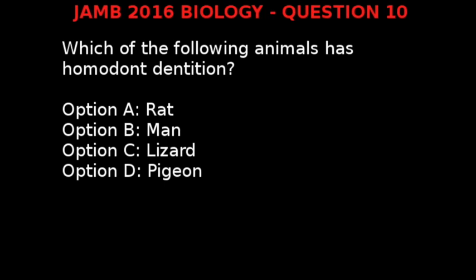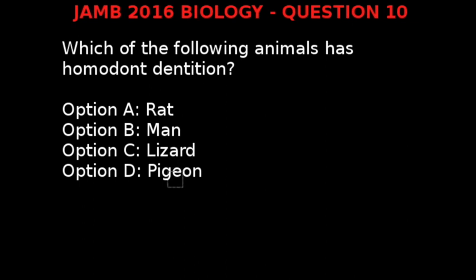JAM 2016 Biology Question 10. Which of the following animals has homodont dentition? Option A: Rat. Option B: Man. Option C: Lizard. Option D: Pigeon. Homodont dentition is a type of teeth arrangement where all teeth have the same size and shape and perform the same function — no tooth is specialized for a particular function. Examples include reptiles, fishes, and amphibians. The only reptile among the options is the lizard. Therefore, our correct answer is Option C, Lizard.